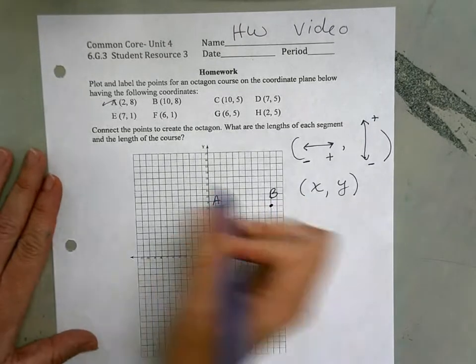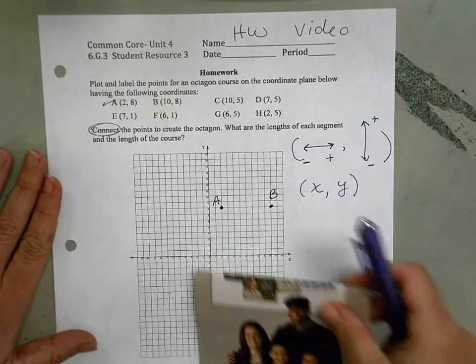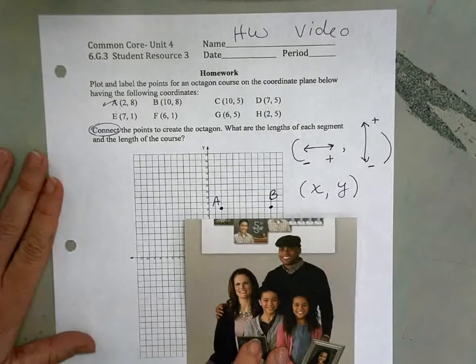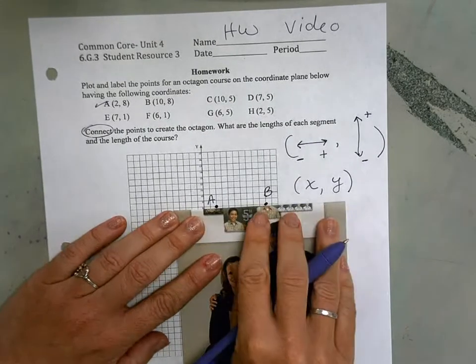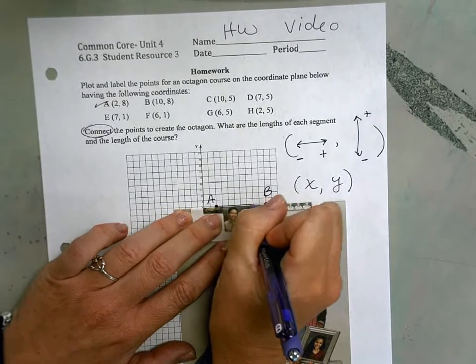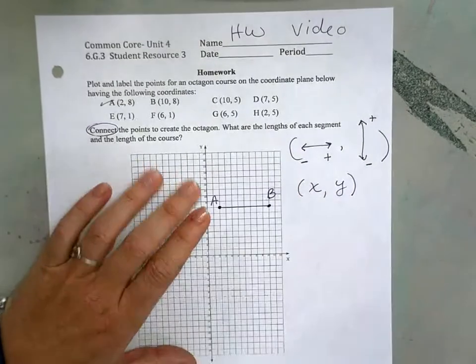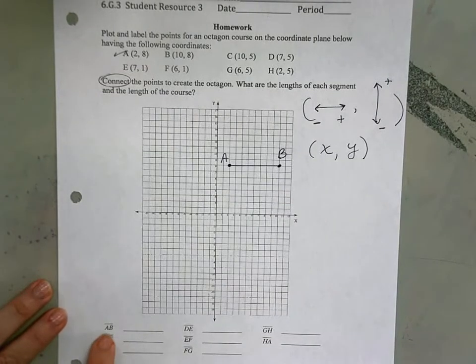It does ask us to connect the points. So you can use a ruler, or any straight edge. I'm going to use a piece of paper folded in half. You could use the edge of your agenda, or the edge of a notebook. But something that's going to give you a firm edge, and you're going to connect points A and B.